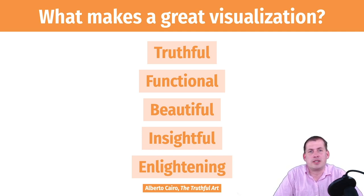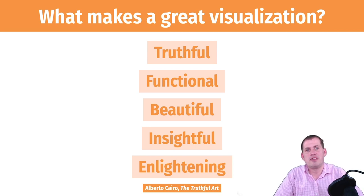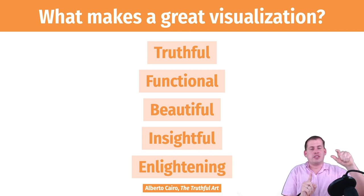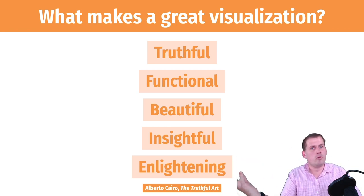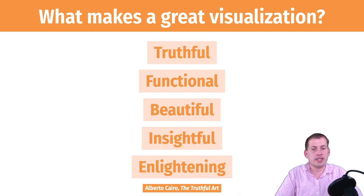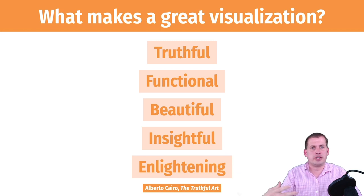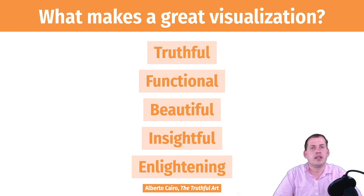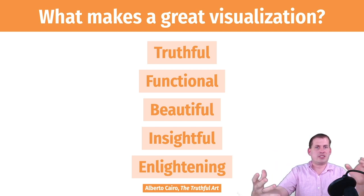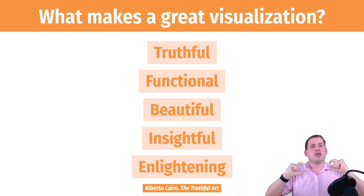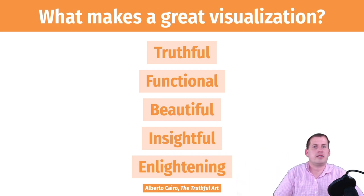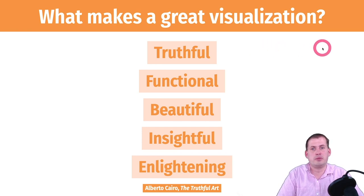Beautiful means it's aesthetically pleasing — people can look at it and say 'wow, that's neat,' it's attractive and intriguing, it grabs your attention and helps communicate truth more effectively. Insightful means it reveals something you wouldn't have seen otherwise — like plotting data with distributions showing significance is far more insightful than a boring table of numbers. Enlightening means it will change our minds for the better, helping us make better decisions and improve ourselves.